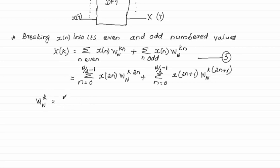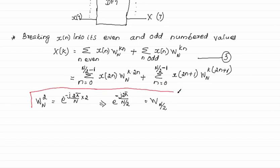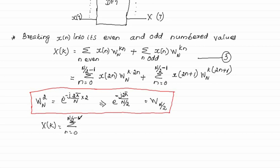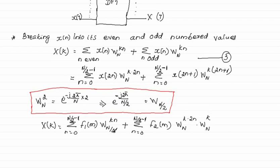We know the twiddle factor W_N = e^(−j2π/N). So W_N² = e^(−j2π/N · 2), which can also be written as e^(−j2π/(N/2)), which is actually equal to W_{N/2}. So whenever we get W_N^(2kn) we replace it by W_{N/2}^(kn). In the second summation we split the W_N power term into two parts, and since the summation is over n, we take W_N^k outside the summation.